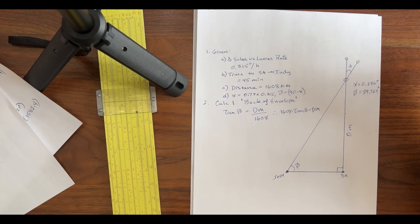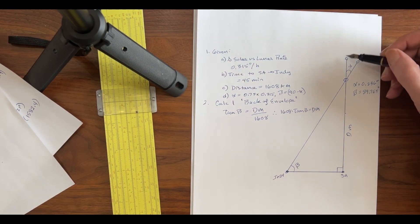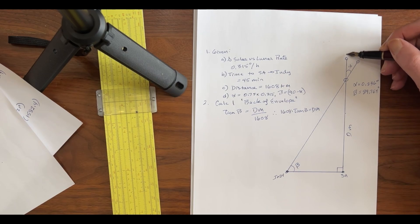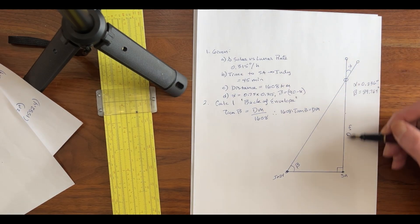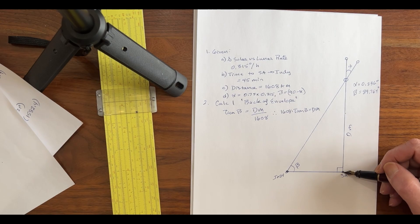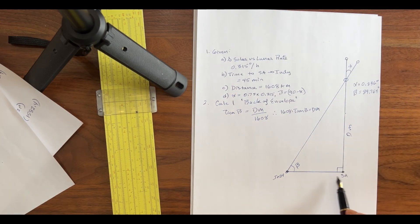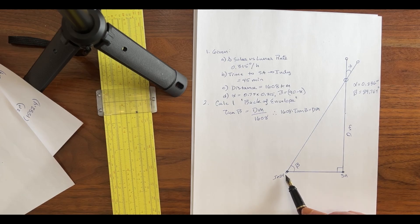Now, the solar eclipse is going to occur at San Antonio at approximately solar noon. So at that time, the Sun will be located here, the Moon will be located here, and the solar eclipse will be over San Antonio. Forty-five minutes later, the solar eclipse will move to Indianapolis, Indiana.